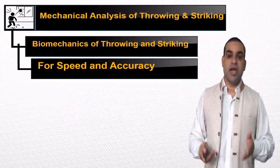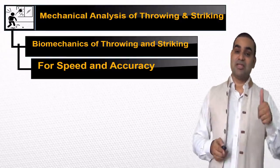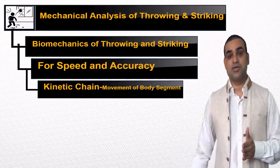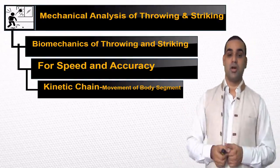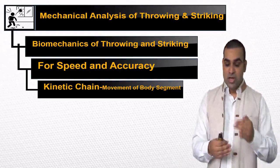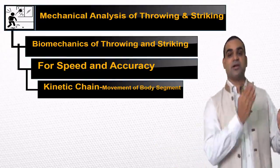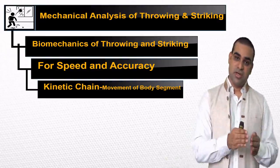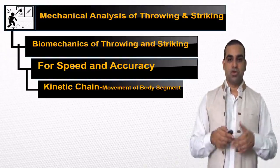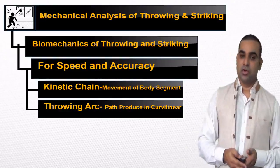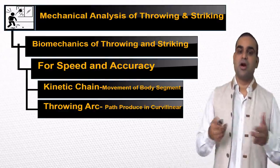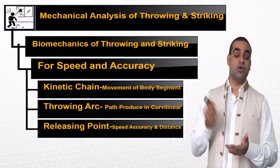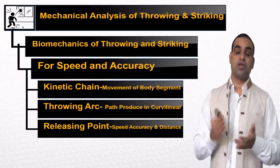The next factor is speed and accuracy. For that, kinetic chain — the summation of the forces. The forces are joined from your toe, from your knee, from your hip, from your shoulder — this gives a movement pattern. It gives the summing up of the segments, a chaining factor, a kinetic chain, so that it transfers force which helps to get speed and accuracy. The throwing arc is also one of the factors to get speed and accuracy, as the path is produced in curvilinear. The releasing point also depends upon the objective of the skill — for speed, accuracy, distance, or a combination or modification of the pattern.